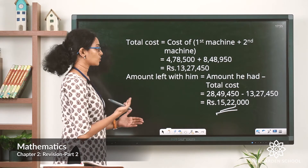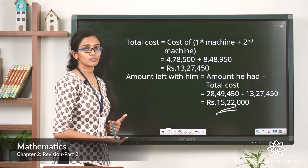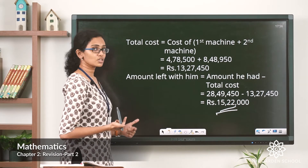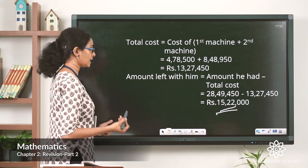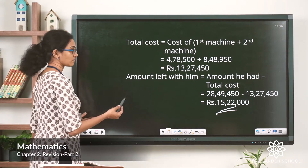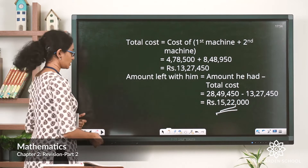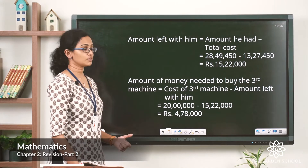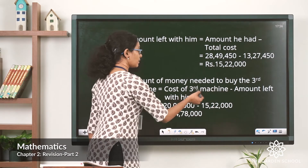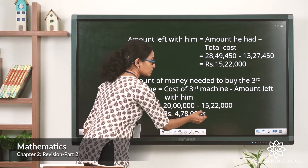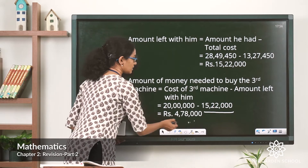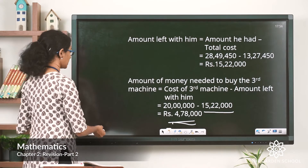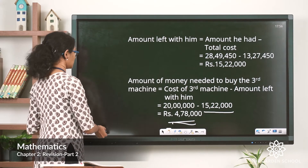Now Atul has rupees 15,22,000 with him. He wants to buy a third machine for rupees 20 lakh, which is more than this amount. To find how much more money he needs, we subtract the amount left from the cost of the third machine: rupees 20 lakh minus 15,22,000. That gives us a difference of rupees 4,78,000 — the additional money he needs to buy the third machine.